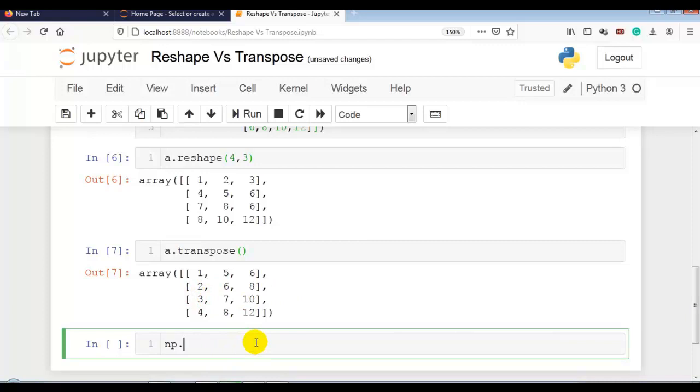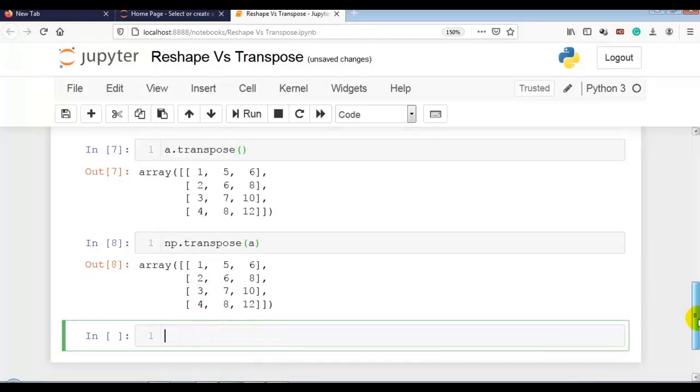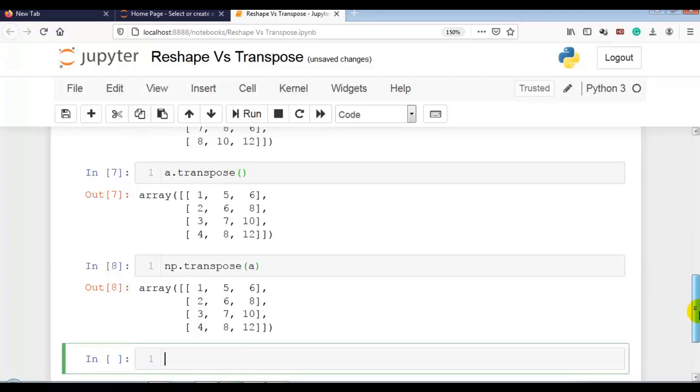Also we can use np.transpose and pass our array to it. This is the difference between reshape and transpose. As I said, it still depends on the application which function to use. Thank you.